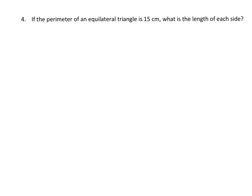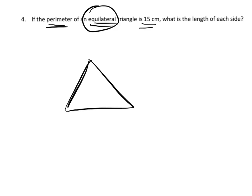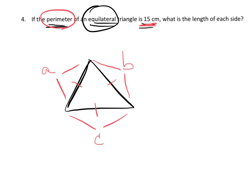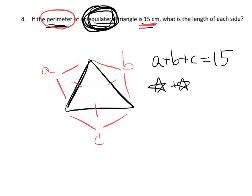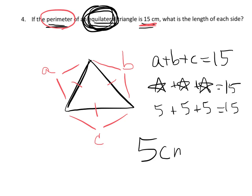Here's a word problem: the perimeter of an equilateral triangle is 15. An equilateral triangle means all three side lengths are the same. So if we call them A, B, and C, then A plus B plus C equals 15. Since all three are equal, what number plus itself plus itself again equals 15? That makes each side 5. Five plus five plus five is 15, so each side length is 5 centimeters.